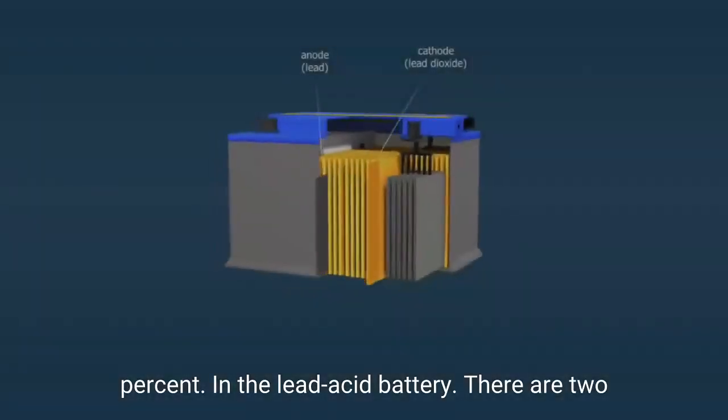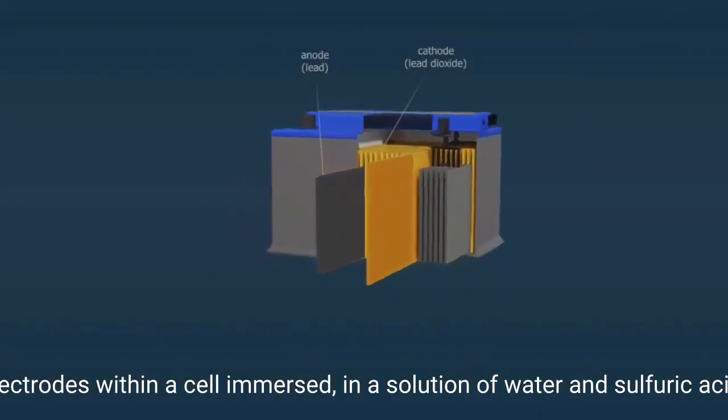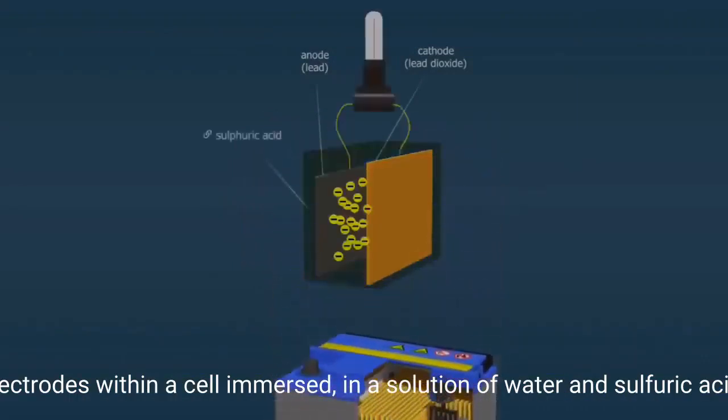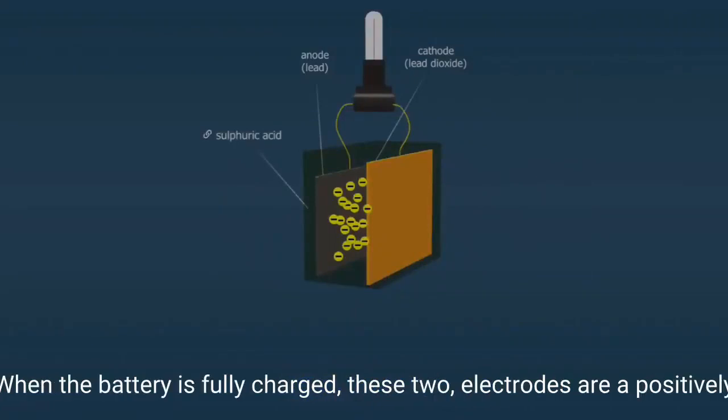In the lead-acid battery, there are two electrodes within a cell immersed in a solution of water and sulfuric acid. When the battery is fully charged,